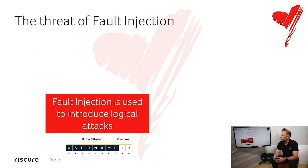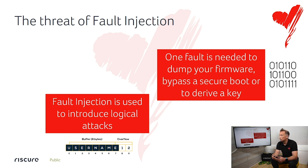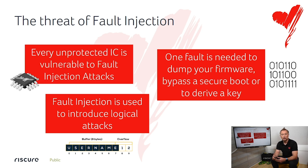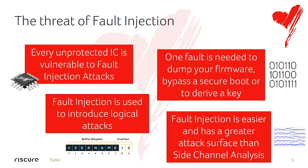The threat of fault injection is that you can introduce logical attacks like buffer overflows. With one fault you can dump a firmware, bypass a secure boot, or even get the key out. We say every unprotected IC is vulnerable to fault injection attacks. Fault injection is actually easier than another hardware attack — side channel analysis — and the attack surface is much bigger than side channel analysis, which focuses only on encryption.